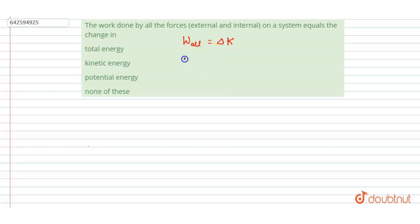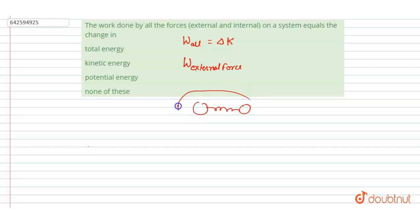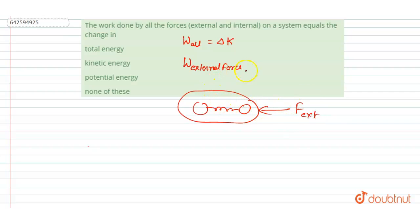So you may think: what about the potential energy? Let's suppose we talk about the work done by an external force. Consider a system of two balls containing a spring. Whatever work is done by any external agent — let's call it force F — it does some amount of work.